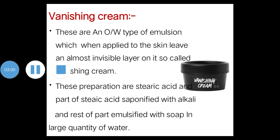Vanishing creams are an O/W type of emulsion which, when applied to the skin, leave an invisible layer on it — that is why they are called vanishing cream. They are called vanishing cream because they seem to disappear when rubbed into the skin, and they spread easily. These preparations are stearic acid-based.